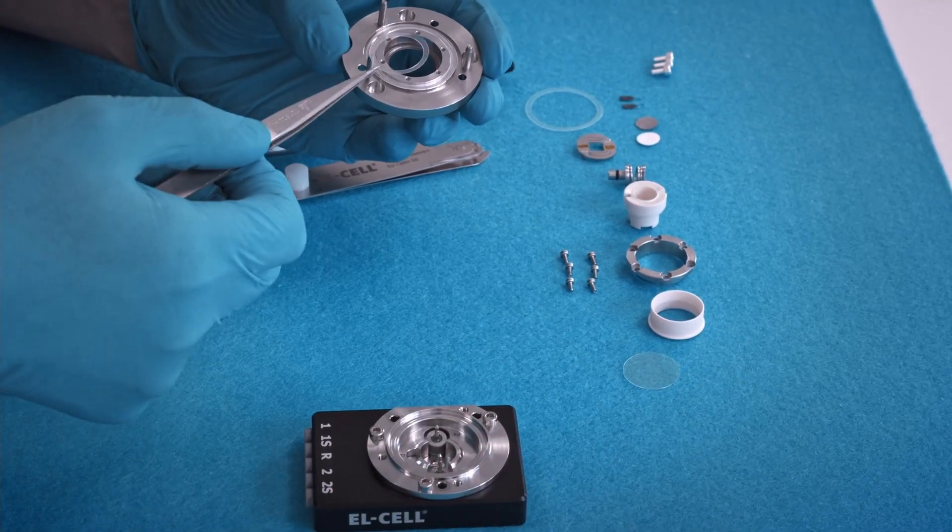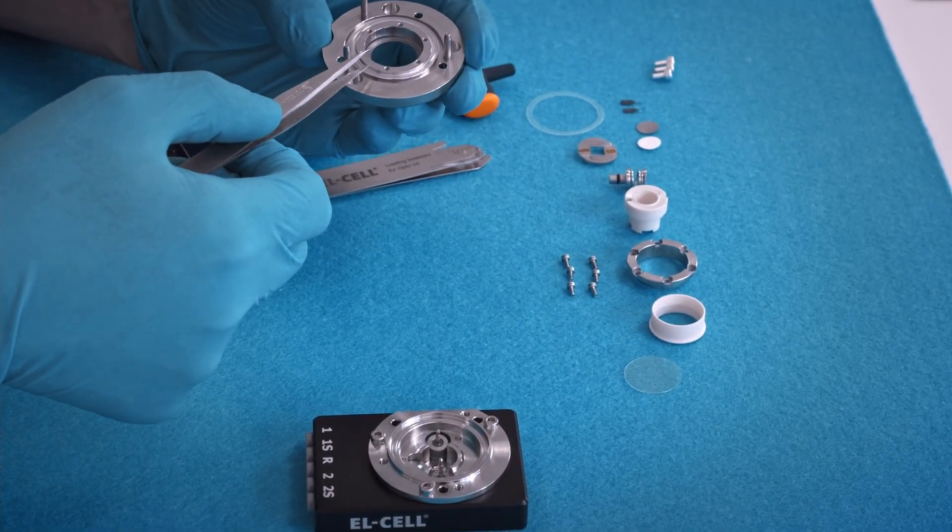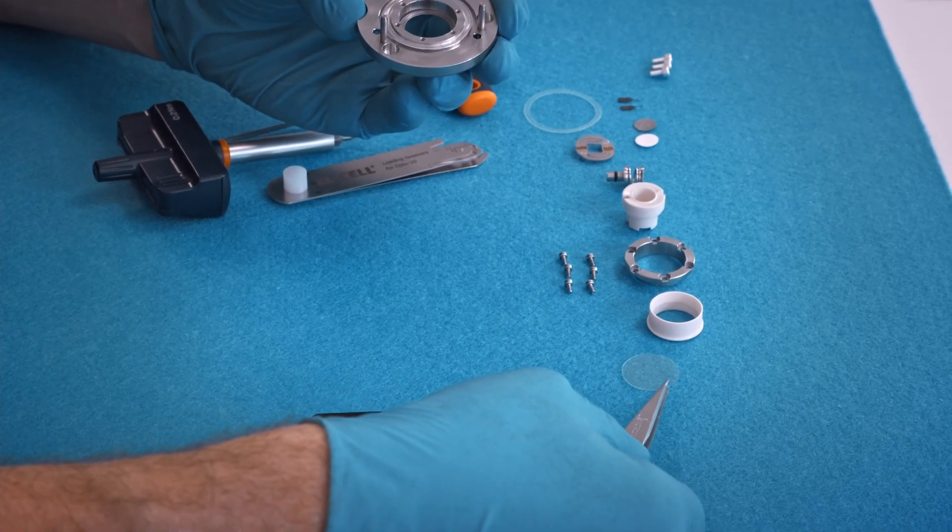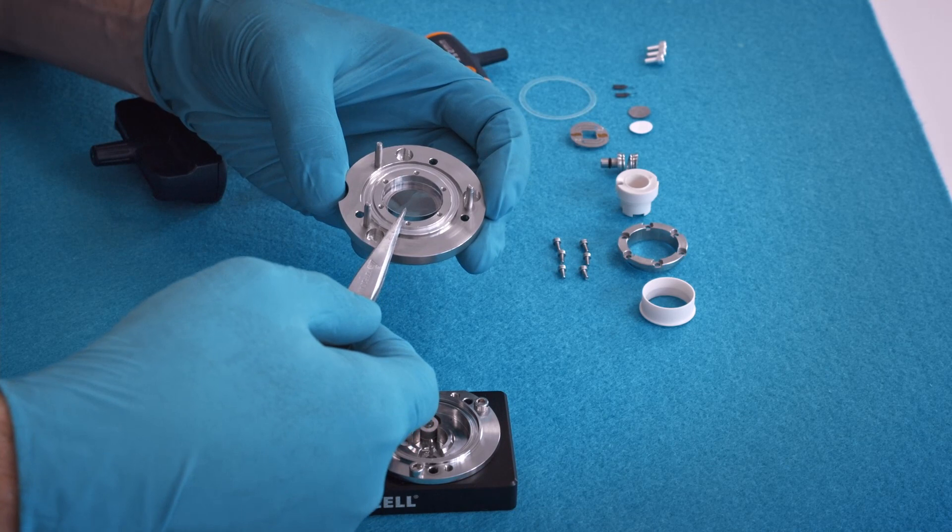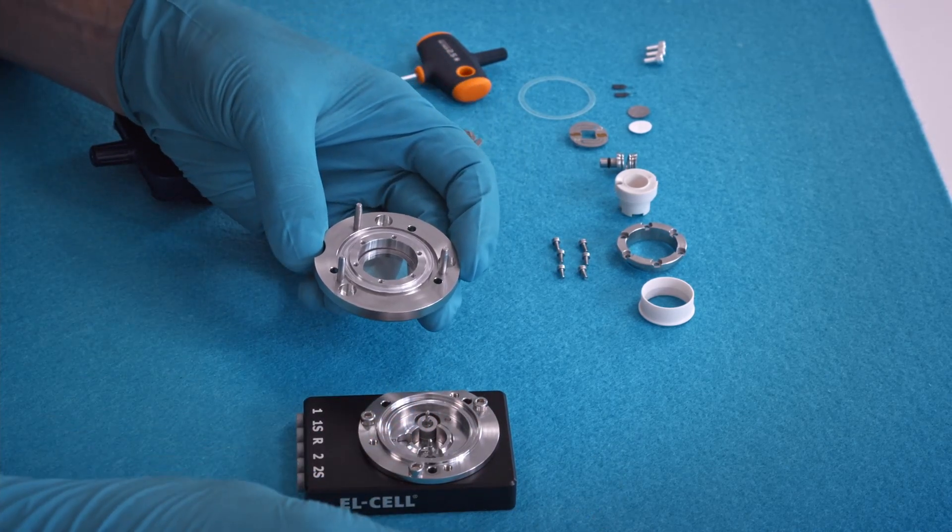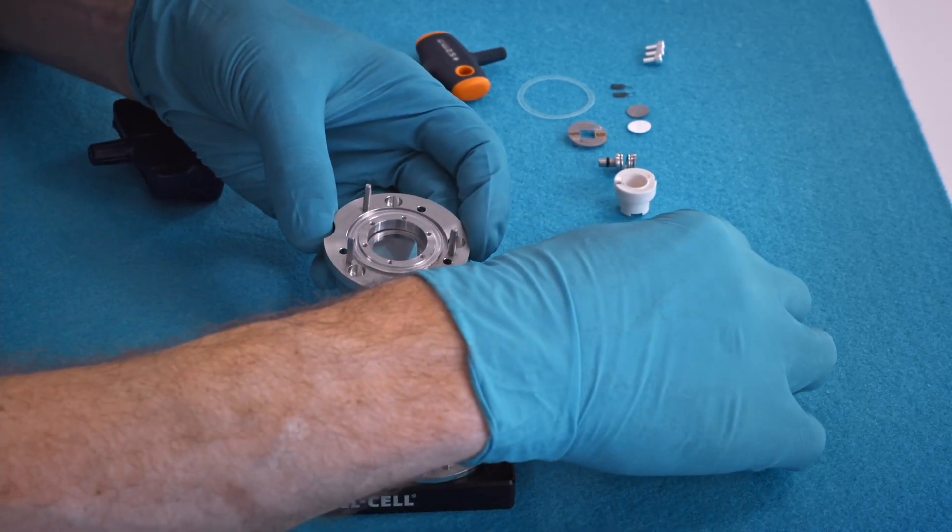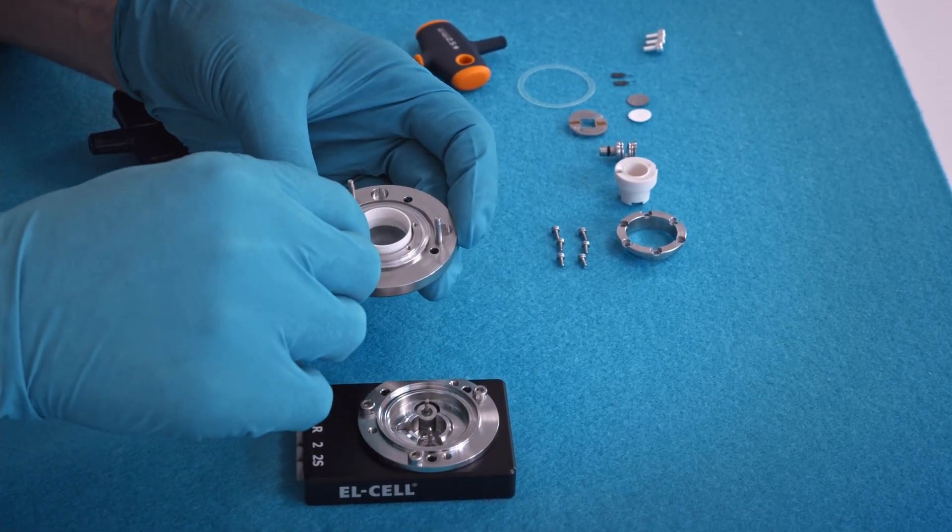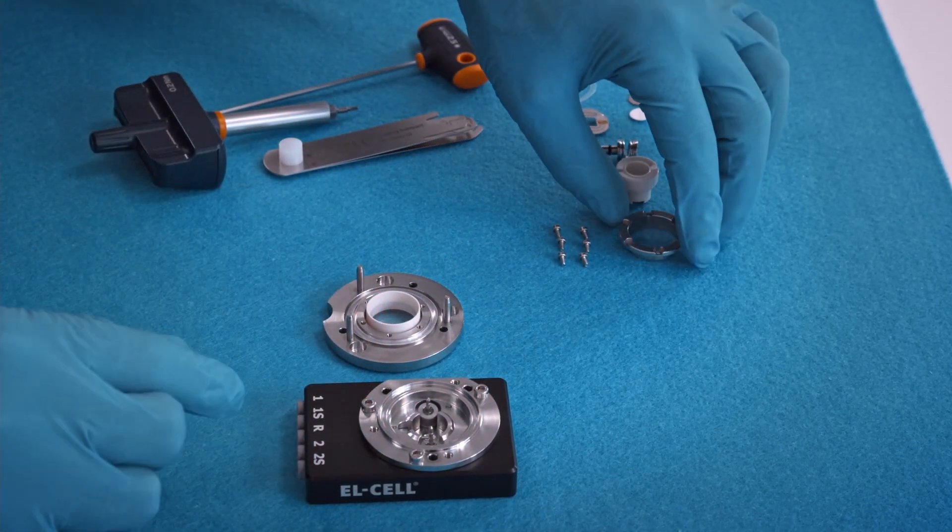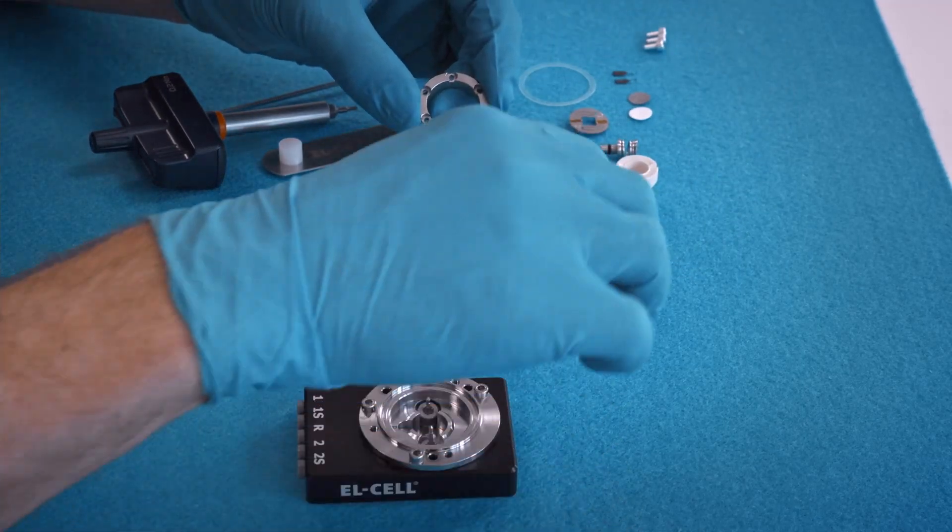Put the seal into the lid, then on top the window, sapphire window in this case. Insert this plastic sleeve, then attach the flange with the provided screws.